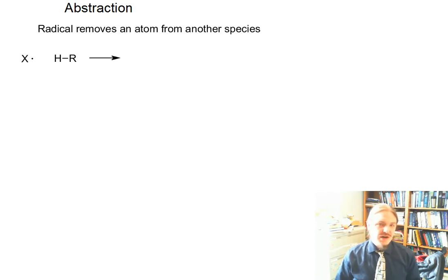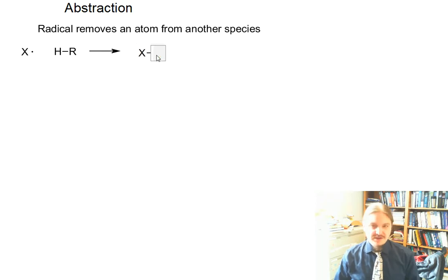And so the abstraction step is one in which this halogen radical or whatever this other radical is bumps into the organic molecule and runs off with one of its atoms, the hydrogen being relatively likely. And we leave behind the organic radical.